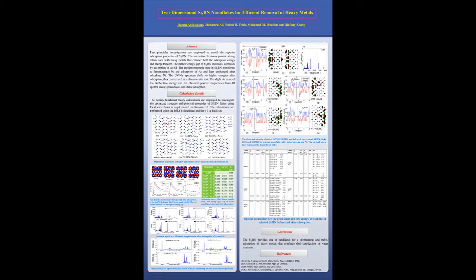The calculations of the magnetic properties show that SI2BN has anti-ferromagnetic spin ordering that kept unchanged by adsorbing nickel while transformed to the ferromagnetic state by adsorption of arsenic due to the unpaired electron for arsenic atom.